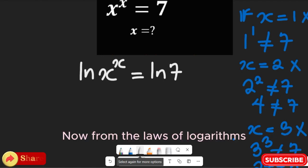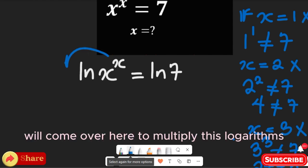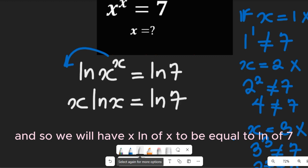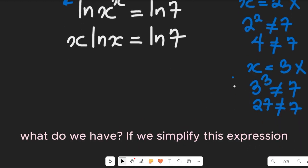From the laws of logarithm, the power comes down to multiply the logarithm, so we'll have x·ln(x) equal to ln(7).